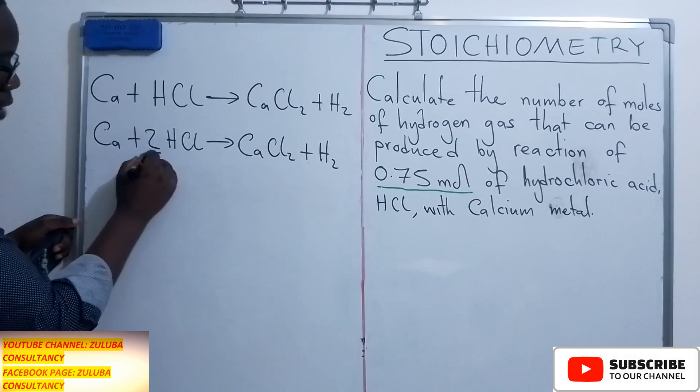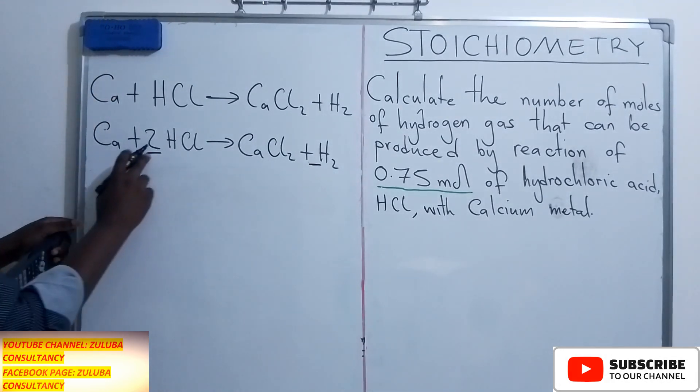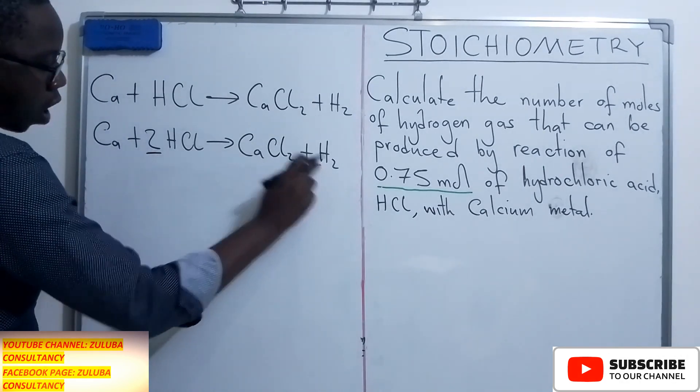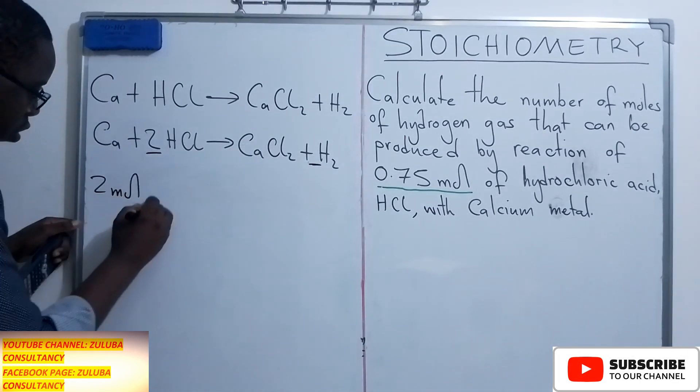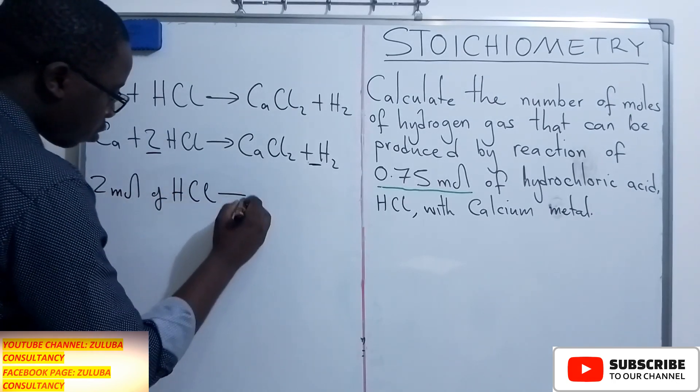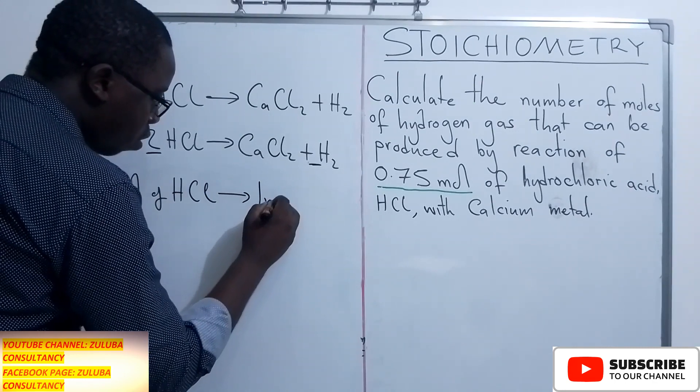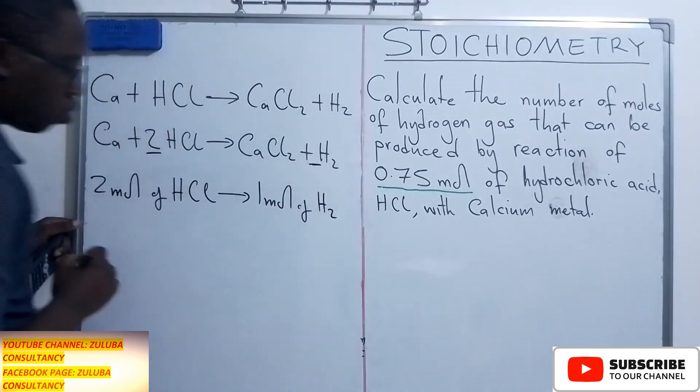Now when you look at this number and this number here, these are the mole ratios. So we have 2 to 1. So when 2 moles of the acid is used up, only 1 mole of the gas is produced.